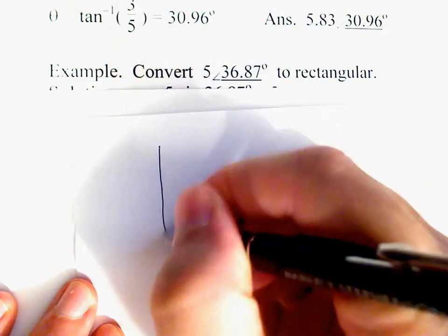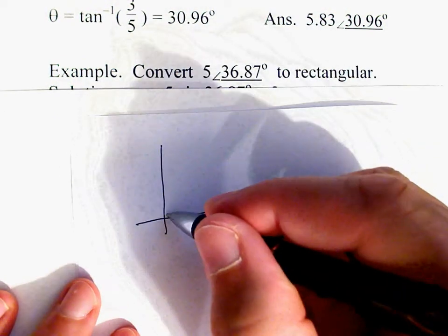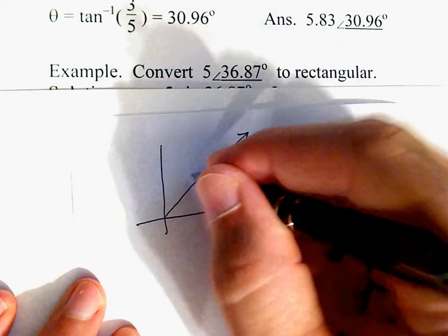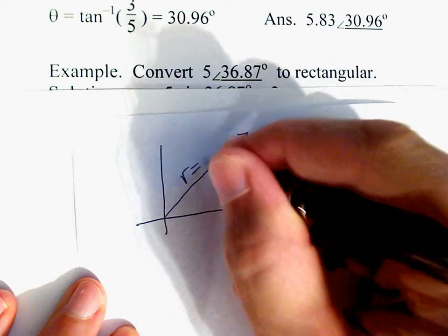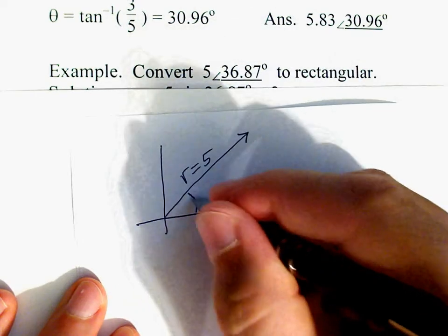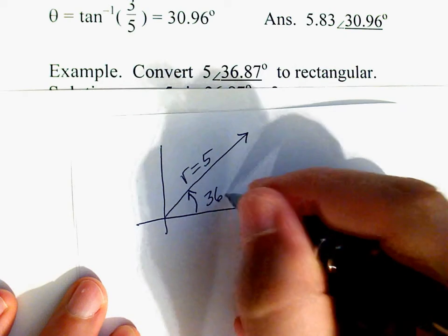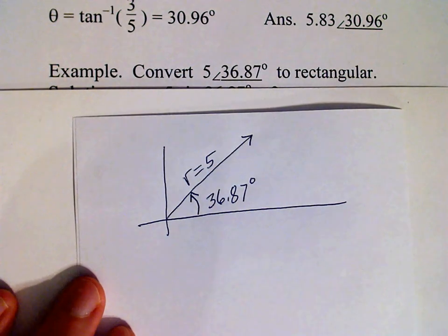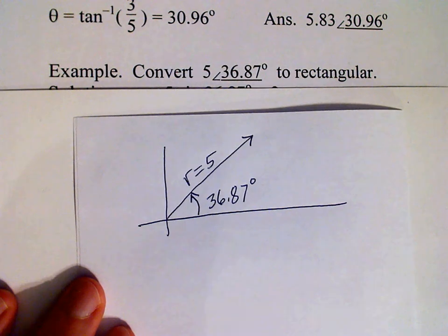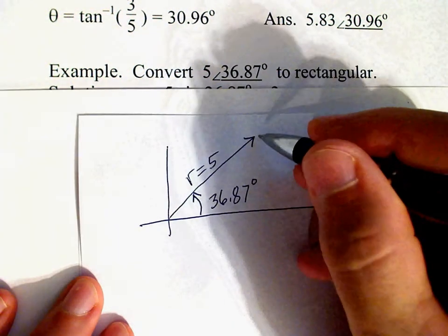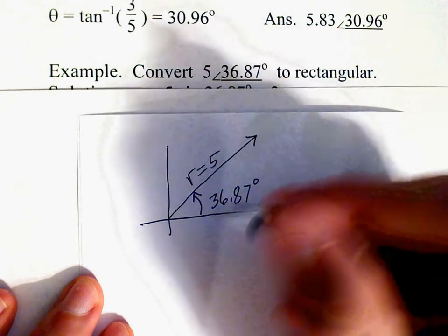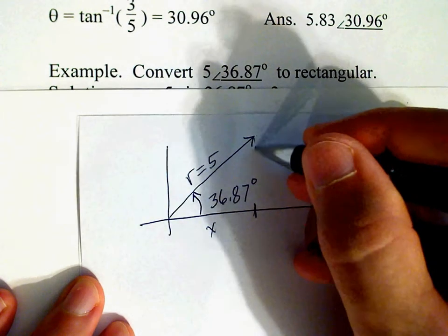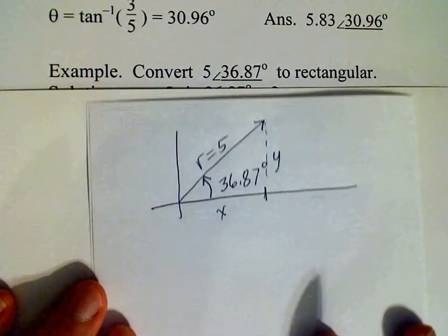Let's draw this picture now. There's a phasor and it has length 5, and then we have an angle here which is 36.87 degrees. We would like to find the rectangular form, which means we need to know this distance here x and this height here y.